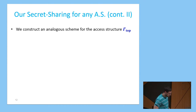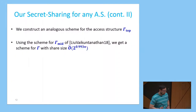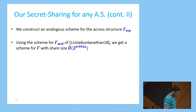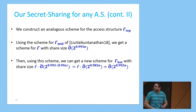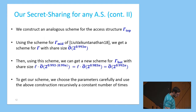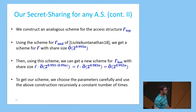For gamma_top we show a similar secret sharing scheme with the same share size. Using the Liu-Vaikuntanathan scheme for gamma_mid, we get a secret sharing scheme realizing gamma with share size O(2^{0.993N}), which is already better than Liu-Vaikuntanathan. In the next step, we can repeat the same process starting with the new share size and get an improved share size for gamma_bot of O(2^{0.992N}). To get our desired scheme, we choose the optimal parameter and apply this construction a constant number of times recursively to get the scheme with the desired share size.